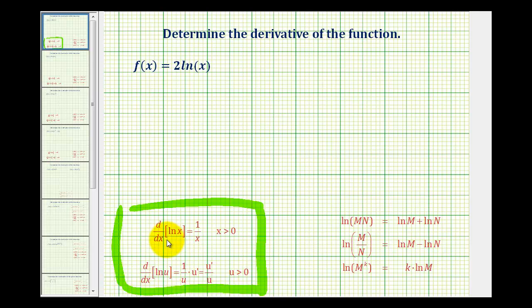Notice the first derivative formula is just for natural log x. The derivative of natural log x is equal to 1 divided by x, or 1 over x. And then we have the derivative of natural log u with respect to x, equals 1 over u times u prime.